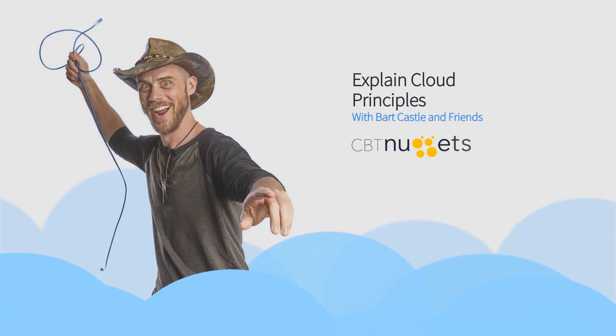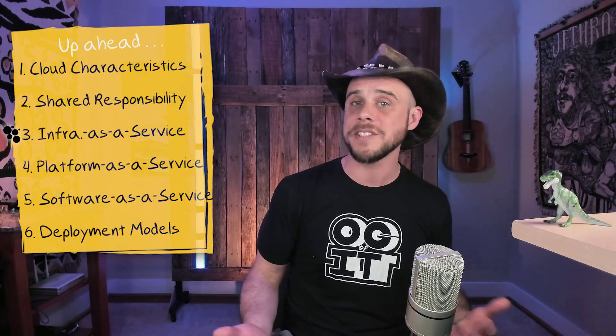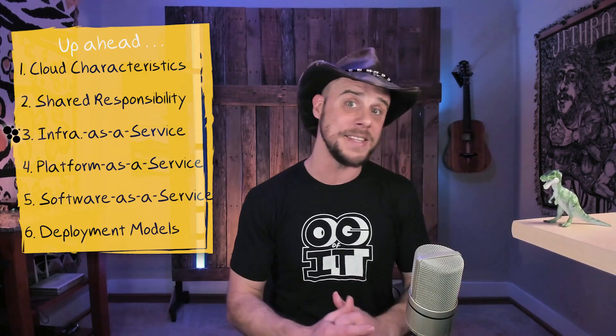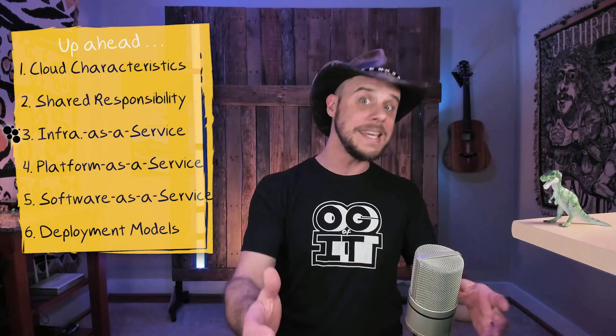Welcome back to Explaining Cloud Principles. So far we've established the characteristics and traits that make a service fit the cloud computing definition, and we've also talked about some of the actors and roles that exist in the cloud ecosystem, like the provider, consumer, auditor, broker, and the carrier. This led us into a conversation around shared responsibility, and that's exactly where we're going to pick things up by looking at the three different service models — infrastructure, platform, and software as a service — and how that responsibility shakes down across each one of those.